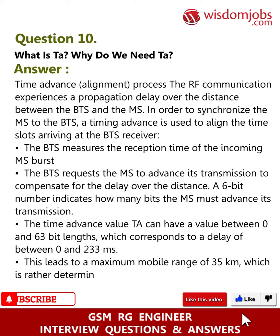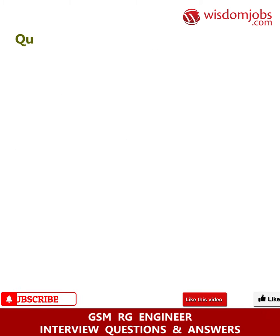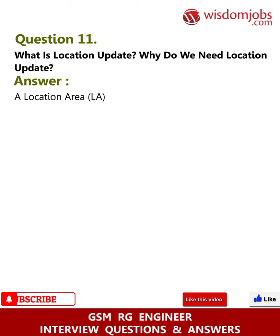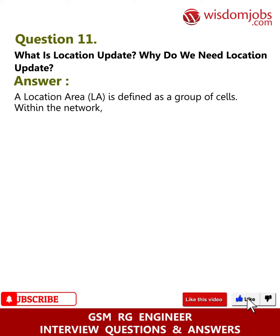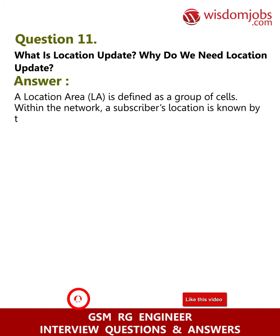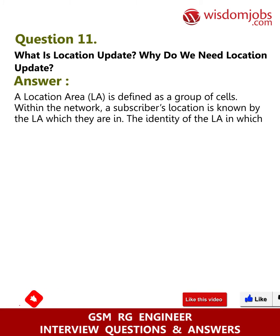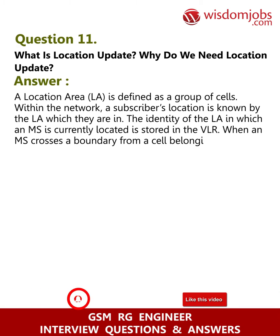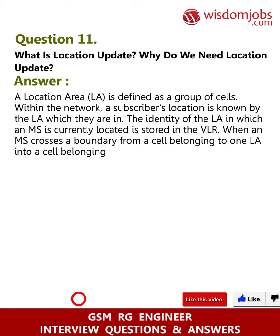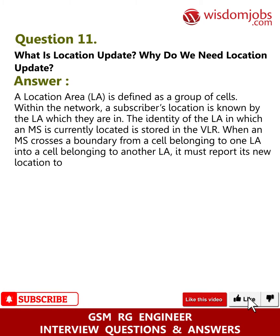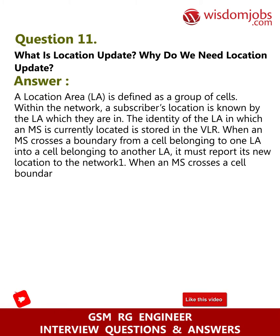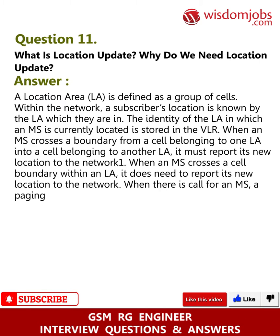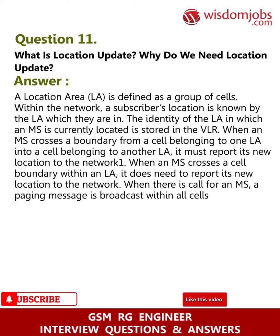Question 11: What is Location Update? Why do we need it? A Location Area (LA) is defined as a group of cells within the network. A subscriber's location is known by the LA they are in, stored in the VLR. When an MS crosses a boundary from a cell in one LA into a cell belonging to another LA, it must report its new location to the network. When there is a call for an MS, a paging message is broadcast within all cells belonging to that LA.